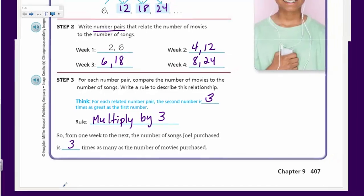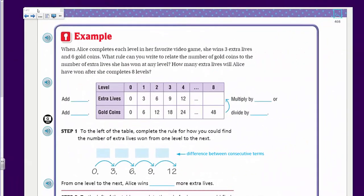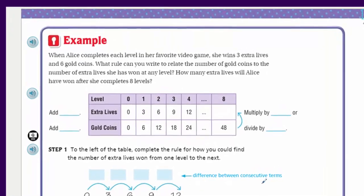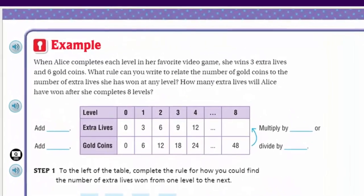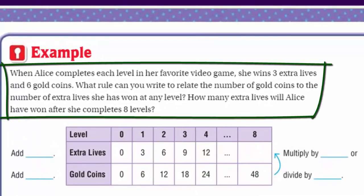Now we have an example. When Alice completes each level in her favorite video game, she wins three extra lives and six gold coins. What rule can you write to relate the number of gold coins to the number of extra lives she has won at any level? How many extra lives will Alice have won after she completes eight levels?